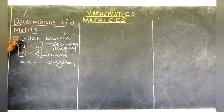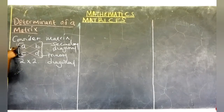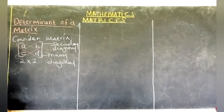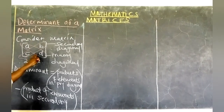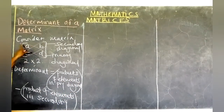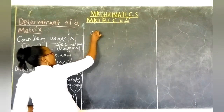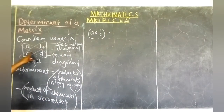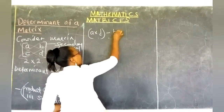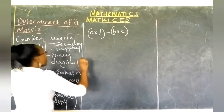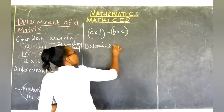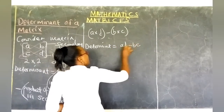Now, finding the determinant of a two by two matrix, what we normally do is that we take the product of the primary diagonal and we subtract the product of the secondary diagonal. In the case of such a matrix, the element in the primary diagonal is A times D, then we subtract the product of elements in the secondary diagonal, that is B times C. So in short, the determinant equals AD minus BC.